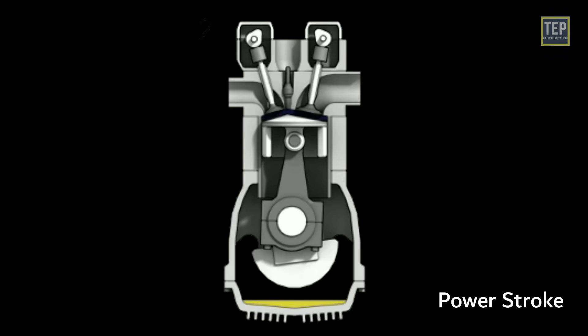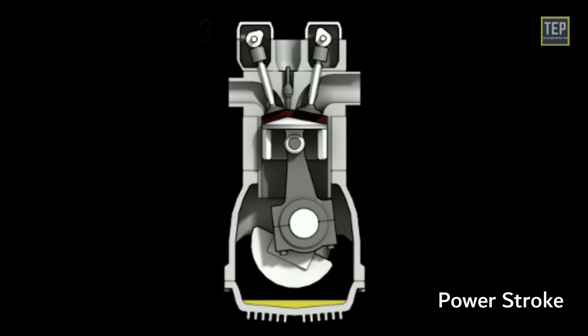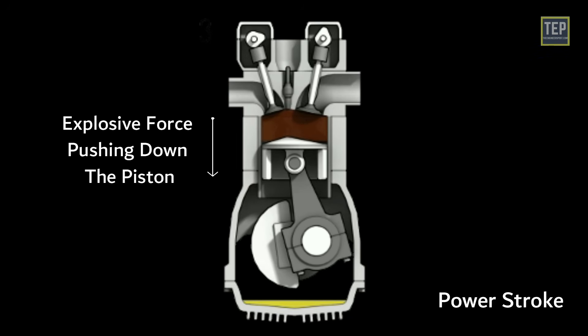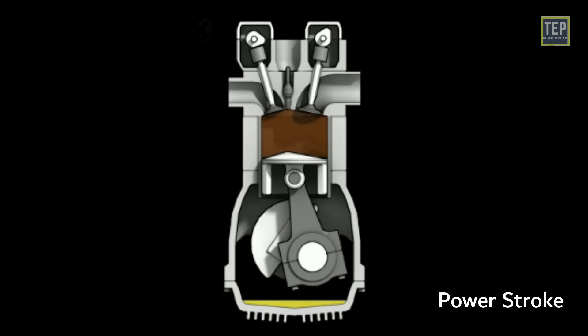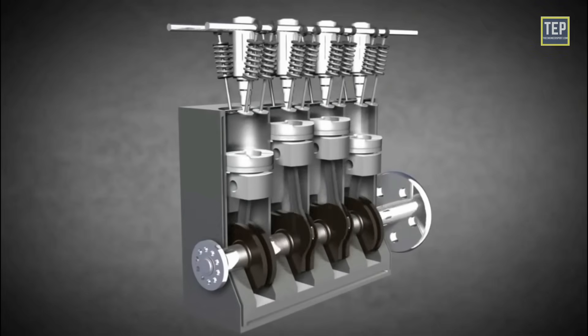Power stroke: The fuel-air mixture at high pressure and temperature is ignited by a spark. This burning increases the pressure and temperature of the gases further. The gases expand, producing an explosive force that pushes the piston down at high acceleration. The linear movement of the piston is then converted into rotary motion of the crankshaft.